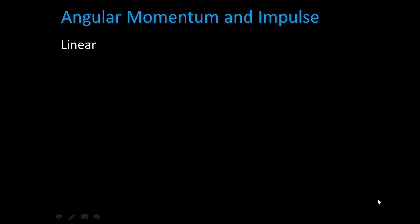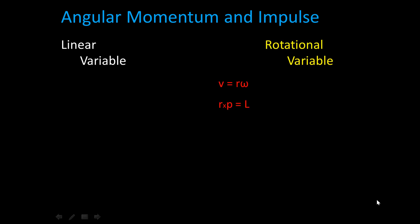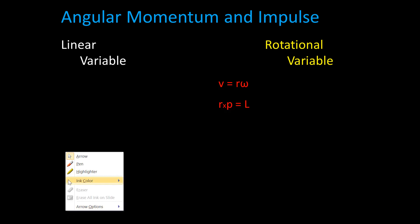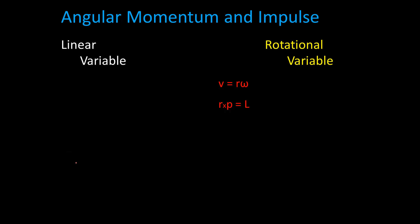There are parallels between the linear and the rotational world. So we'll take a look at our linear variables and our rotational variables. Our velocity in the linear world can be calculated from our rotational world by looking at the radius times omega, our angular velocity. And then there's a new value — P, our momentum, times the radius is going to be equal to L, our angular momentum.